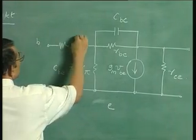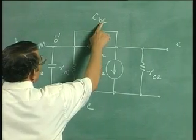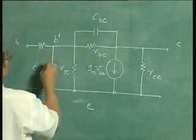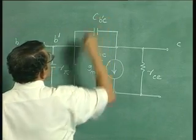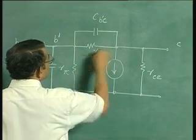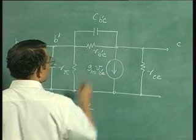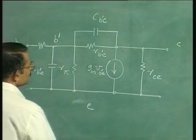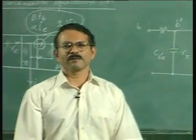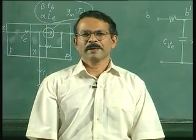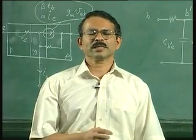Therefore, the voltage drop here between base and emitter will not be the same as the voltage drop at the contact. That is the effect of this resistance, which is called RBB-dash. What we do is therefore call this the external base terminal B, and the internal base terminal — which is the end of this resistance — is called B-dash. So this terminal is B, and in the equivalent circuit we use lowercase letters because we are talking about the small signal equivalent circuit. This terminal is B and the internal terminal is called B-dash, so there is a resistance between the external terminal and the so-called internal base.